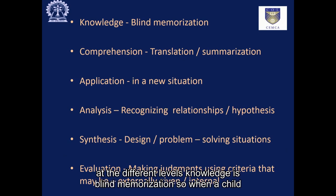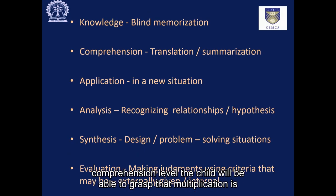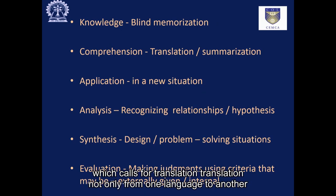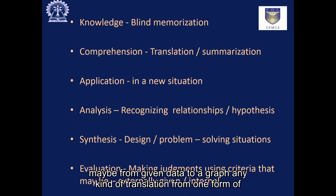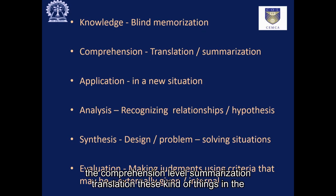Knowledge is blind memorization. When a child learns a multiplication table blindly, the child is in the knowledge level. In the comprehension level, the child will be able to grasp that multiplication is nothing but a form of addition. Any problem which calls for translation — not only from one language to another, but perhaps from given data to a graph, any kind of translation from one form of communication to another — will usually fall in the comprehension level. Summarization and translation are examples of this kind.